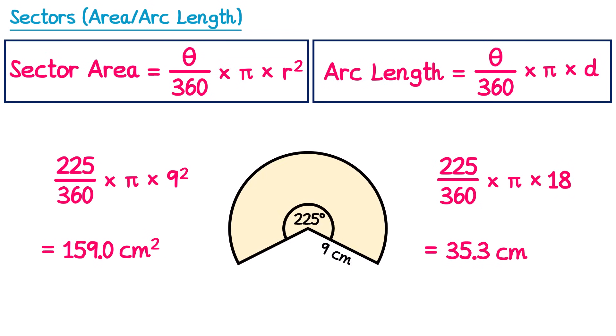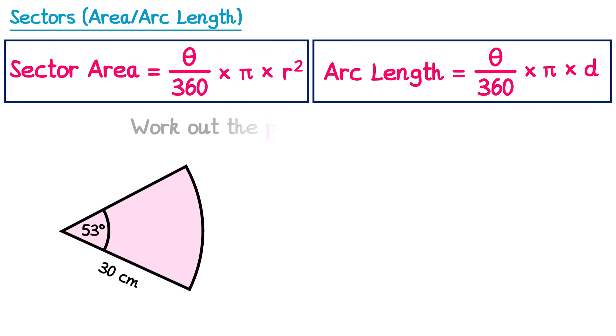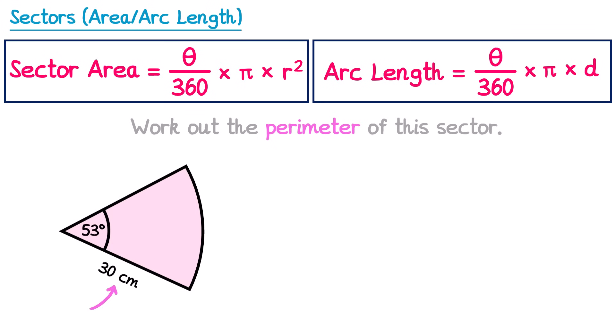Now let's have a look at some more difficult problems. For this question we have a sector and we're asked to work out its perimeter. The perimeter is the sum of all of the sides of the sector. This sector has three sides: this one here which we know is 30 — that's the radius — and this radius over here which must also be 30, and then the arc. So we know two of the lengths already and just need to work out the length of the arc, then add them all together.